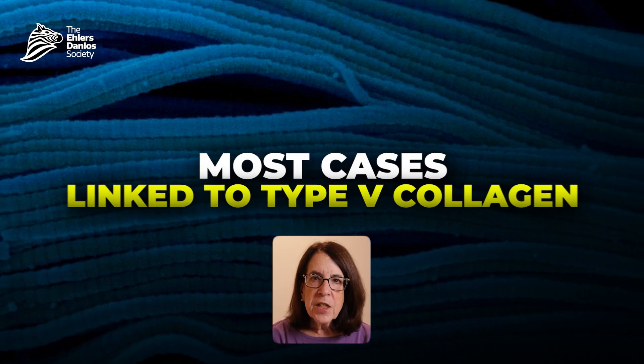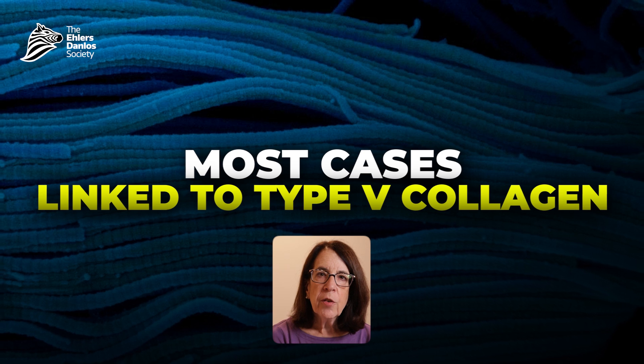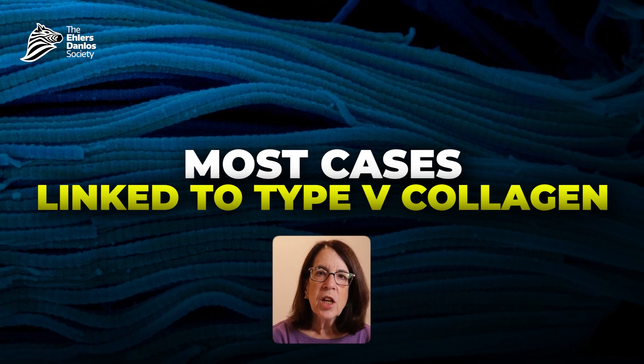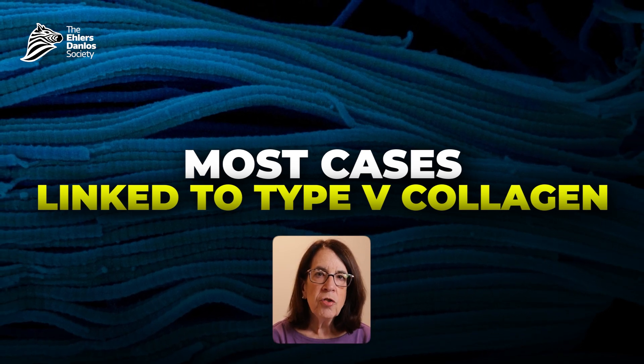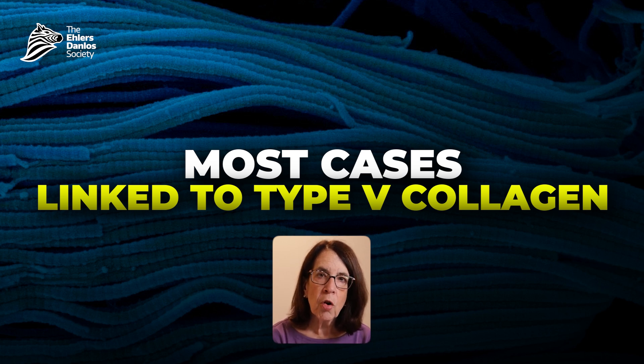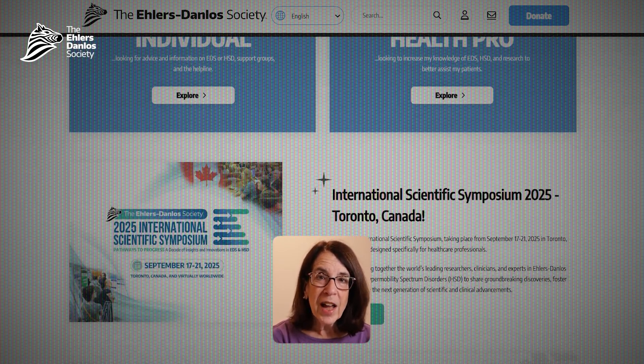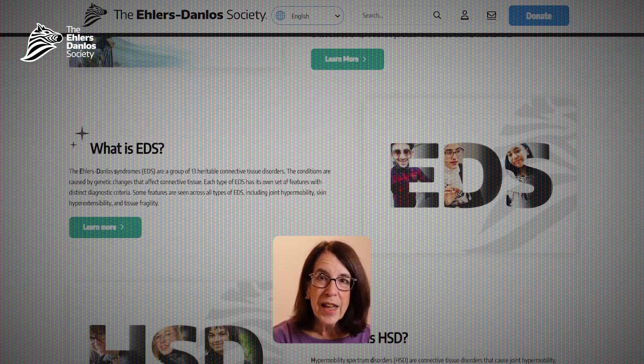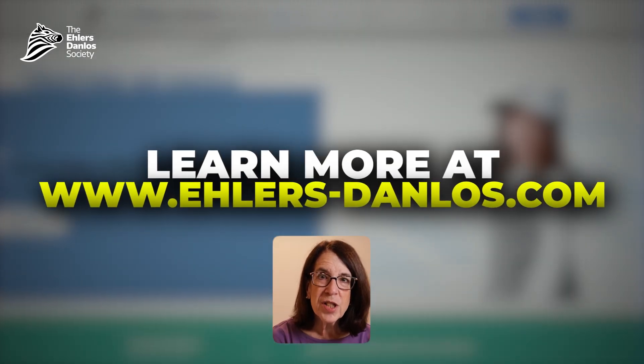Rarely, we may see someone who meets the clinical criteria for classical EDS but has a pathogenic variant in COL1A1, one of the genes encoding type 1 collagen — though this is very unusual. Most people with classical EDS have type 5 collagen variants. For more information, you can visit the Ehlers-Danlos Society website at ehlers-danlos.com.